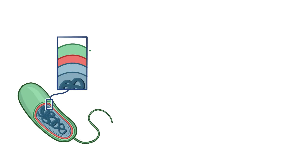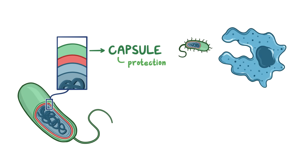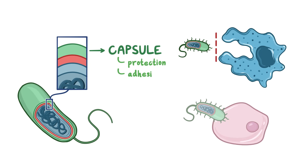Some bacteria are covered by a capsule, which acts as a shield that protects the bacteria against phagocytosis and also helps the bacteria adhere to surfaces. The capsule is considered an important virulence factor, since the strains that lack a capsule are less virulent.